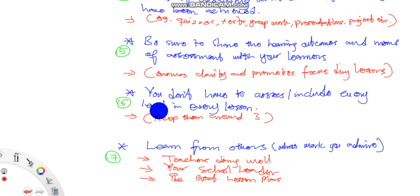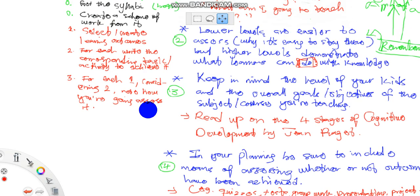And then seven, learn from others whose work you admire in your school or elsewhere. If you admire the way they teach, make sure you learn from them. Your school leaders, these are often people who have had more experience than you in teaching. Government lesson plans have really well crafted learning outcomes so do look at those.